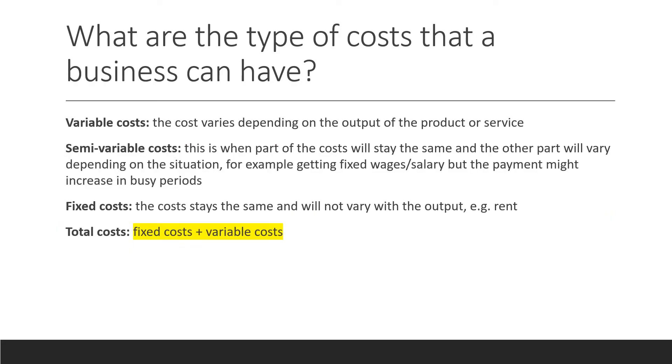What are the type of costs that a business can have? One is variable cost. The cost varies depending on the output of the product or service.